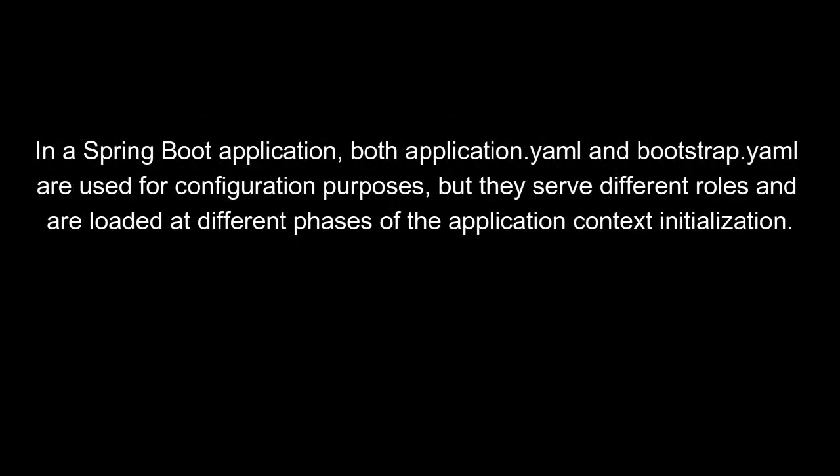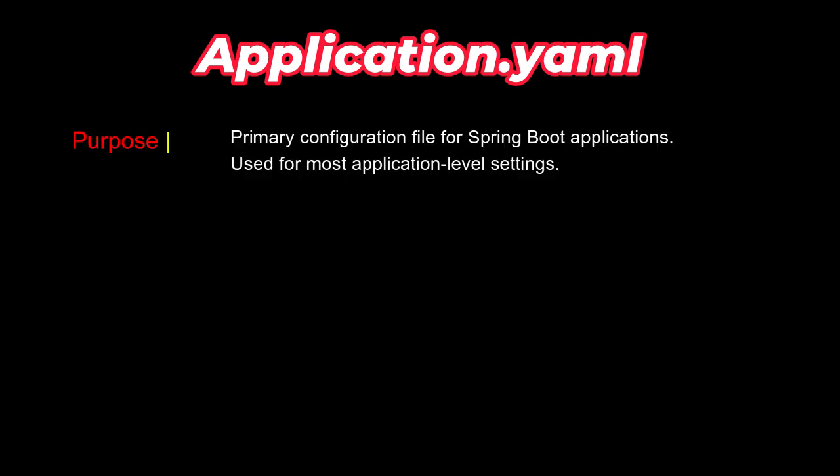In a Spring Boot application, both application.yml and bootstrap.yml are used for configuration purposes. But they serve different roles and are loaded at different phases of the application context initialization. First we will talk about the application.yml purpose — it is the primary configuration file for a Spring Boot application, used for application-level settings.